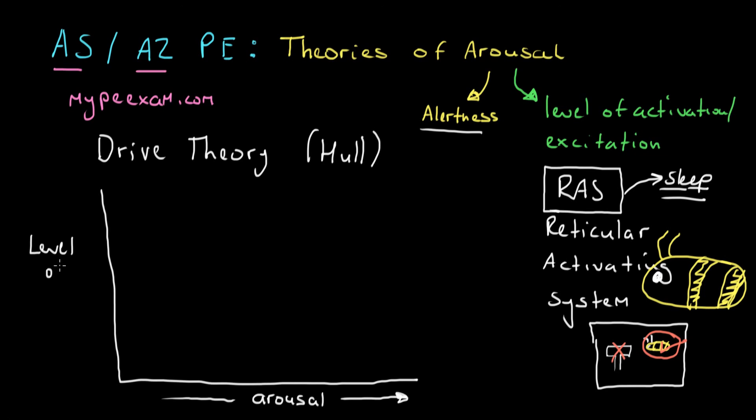It's directly proportional to the level of performance. So if I say it's directly proportional, really high performance is up here at the top, and really low weak performance is down here. Hull argues that arousal and performance increase proportionately.